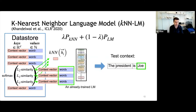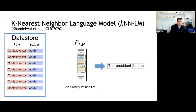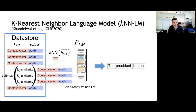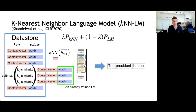In the next time step, we predicted the word 'Joe' in the previous step. So now at time T+1, we get a new hidden state H(T+1), again search for its nearest neighbors in the data store, retrieve the nearest neighbors, compute L2 similarity and softmax, and get the distribution over vocabulary words. We interpolate that distribution with the standard transformer language model distribution and predict the next word.